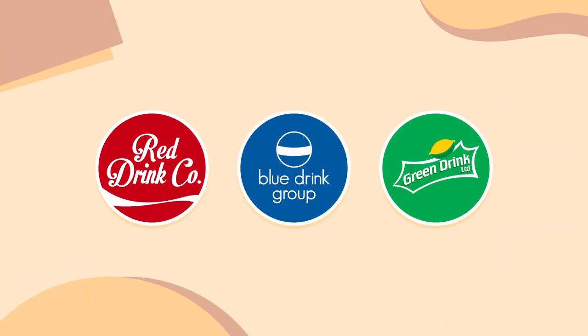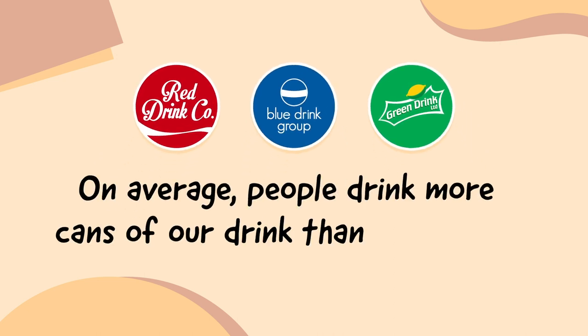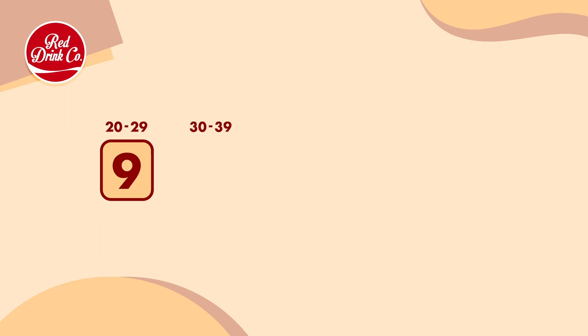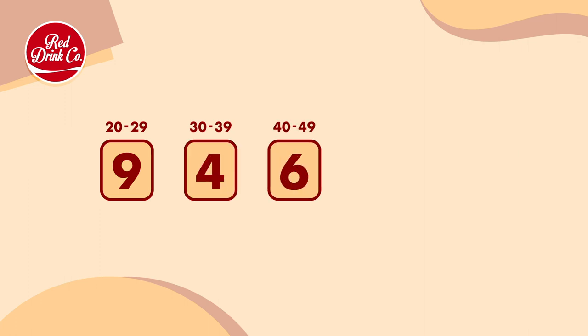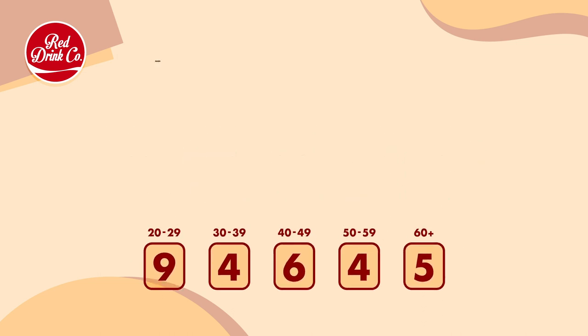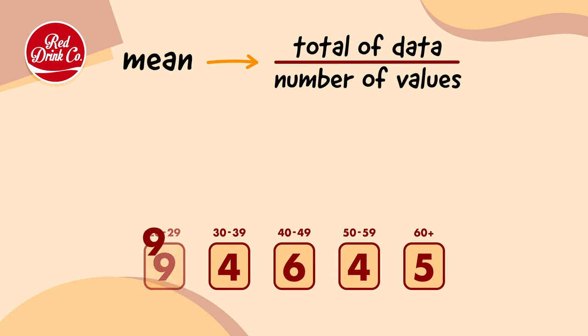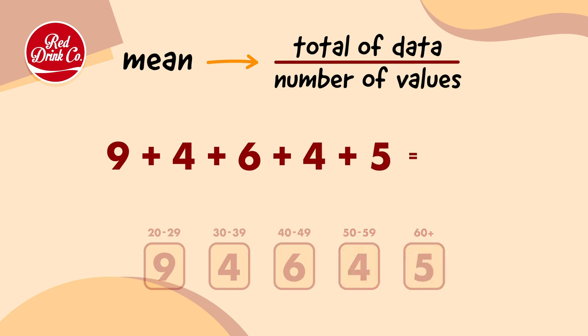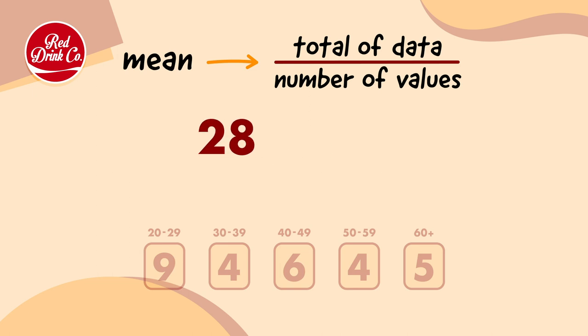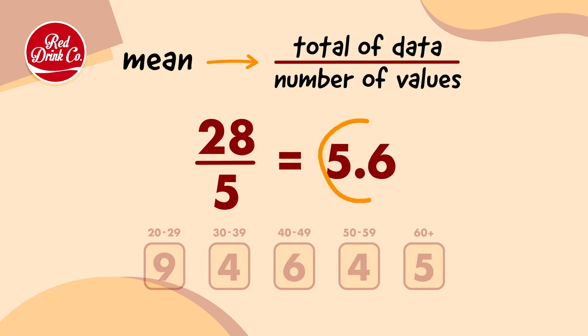I think we're ready to start getting to the bottom of this case. Red Drink Co, Blue Drink Group, and Green Drink Limited all say that on average, people drink their product the most. They all ask different age groups how many cans they drank every week. Let's start by looking at the data from Red Drink Co. People aged 20–29 said they drank 9 cans a week, 30–39 said 4 cans, 40–49 said 6 cans, 50–59 said 4 cans, and 60 plus said 5 cans. So let's calculate the mean: 9 plus 4 plus 6 plus 4 plus 5 equals 28, divided by 5 values, gives us a mean of 5.6.